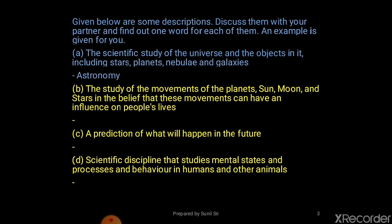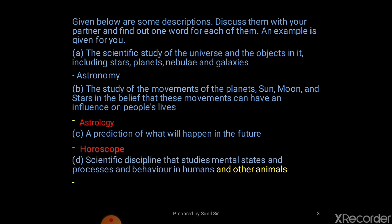The answer given is astronomy. The second one, B: the study of the movements of the planets, sun, moon, and the stars in the belief that these movements can have an influence on people's lives — and it is called astrology. Next: a prediction of what will happen in the future, and the one word for it is horoscope. Next: a scientific discipline that studies mental states and processes of behavior in humans and other animals, and the one word for it is psychology.